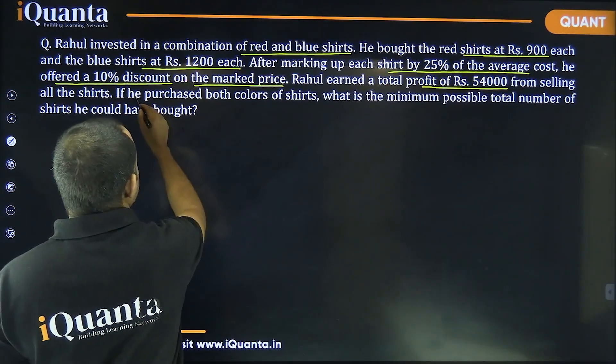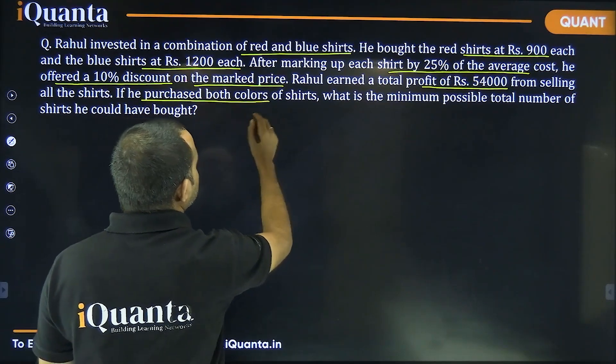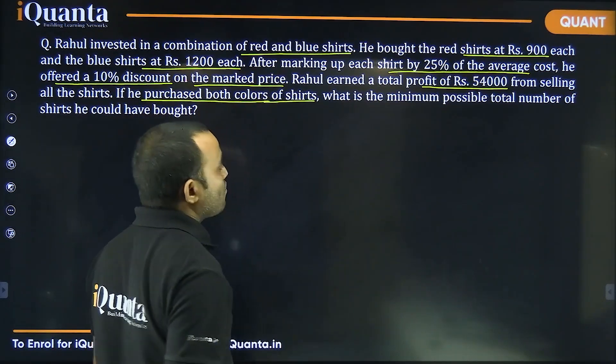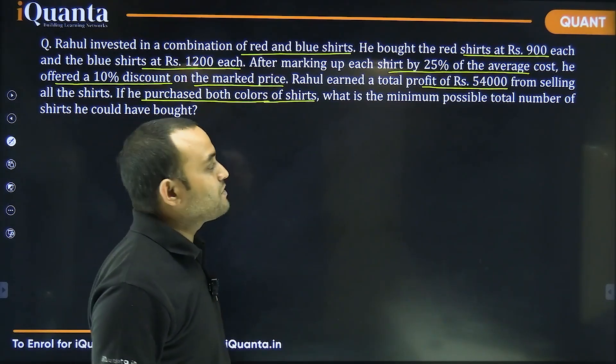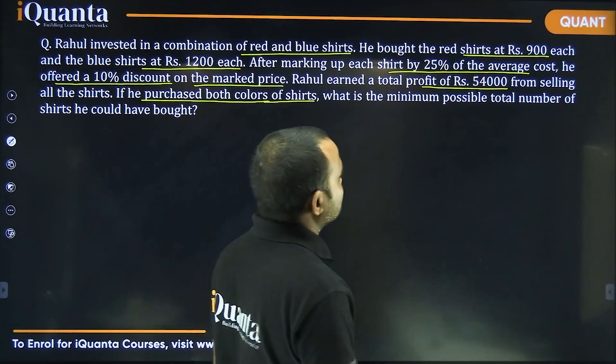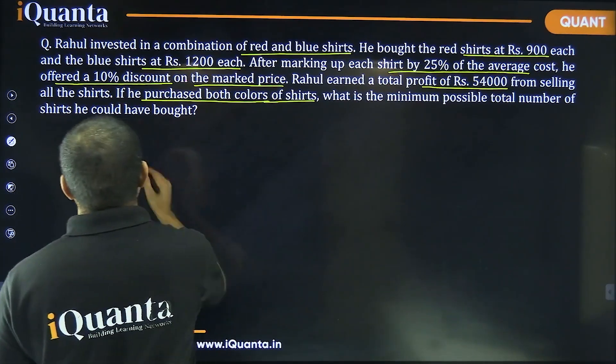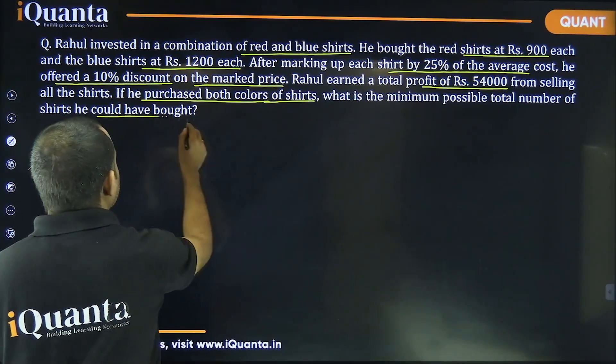If he purchased both colors of shirts, what is the minimum possible total number of shirts he could have bought?